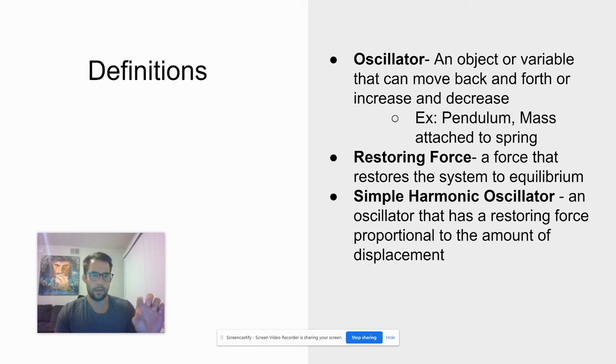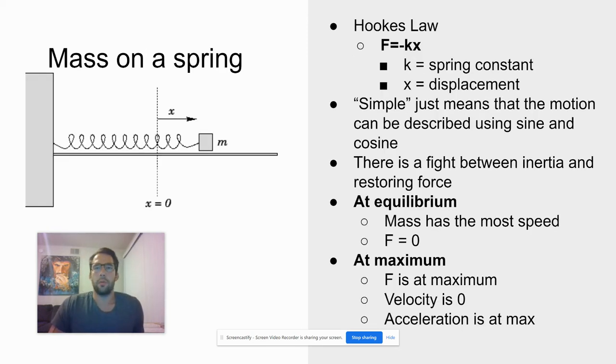Restoring force is the force that makes, if I'm talking about a mass on the spring, it's going to make that mass want to go back to equilibrium. It's the force that is causing it to come back to equilibrium. And a simple harmonic oscillator is one that has a restoring force proportional to the amount of displacement. And what that really just means is that our equation is going to be really easy.